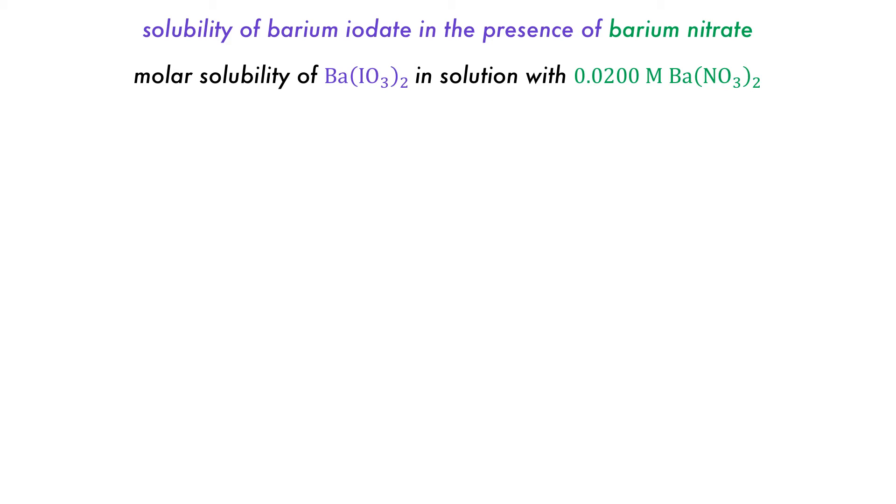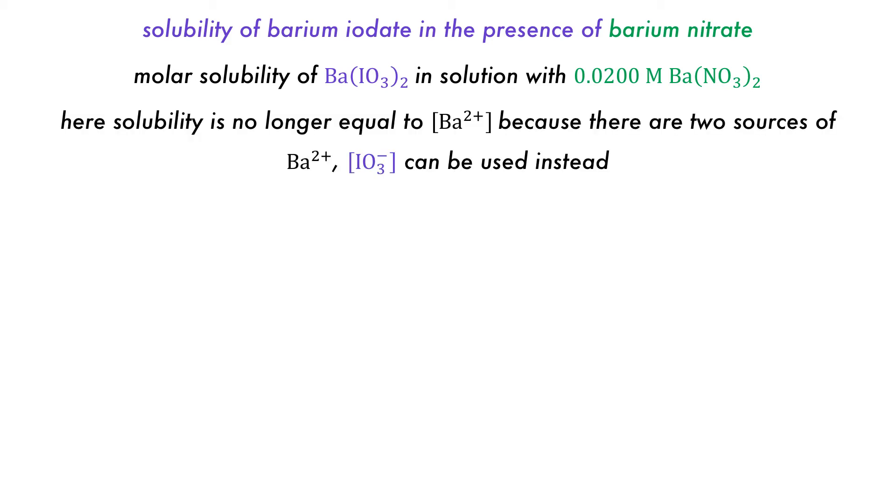Now we can look at the molar solubility of barium in the presence of two different anions. Because we have two barium salts of differing solubilities, the solubility of barium iodate is no longer equal to the barium 2+ ion concentration, and so the iodate ion concentration must be used.